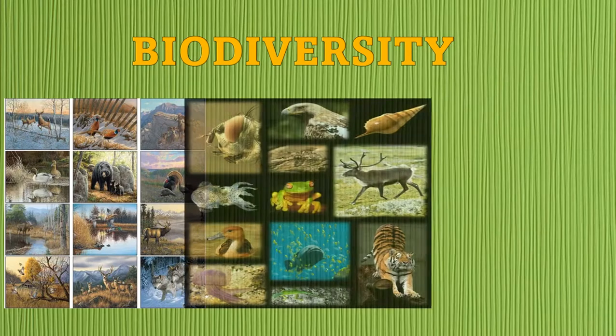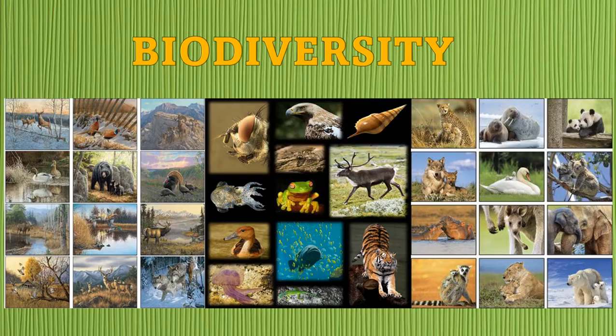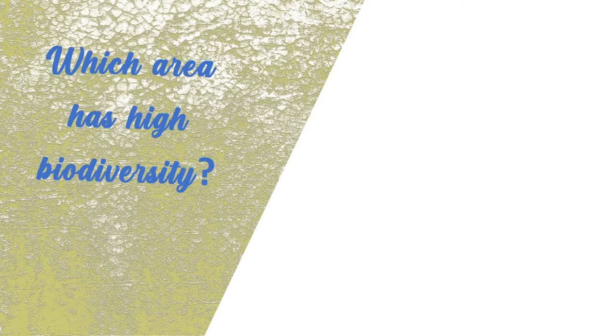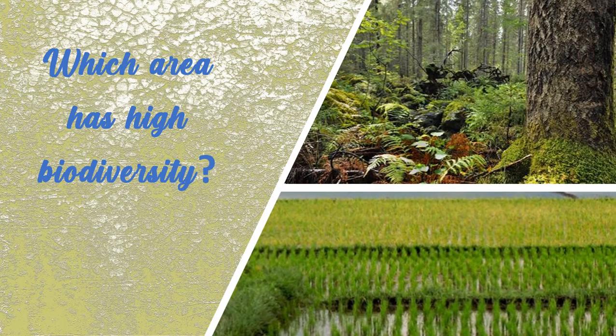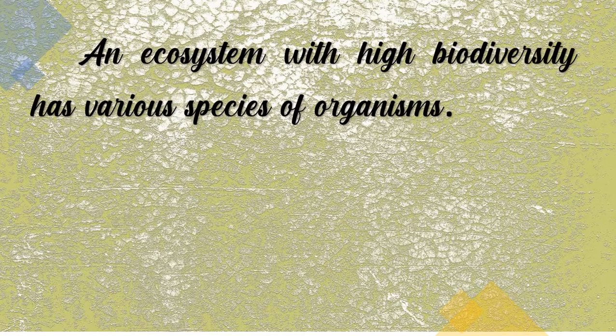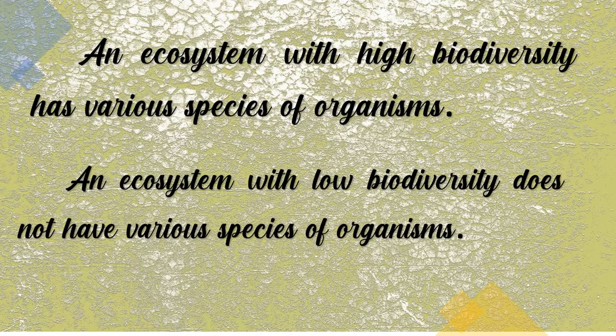In Module 6, you have learned how evolution through natural selection can result in biodiversity. In this module, you will learn how biodiversity can influence the stability of an ecosystem. Biodiversity describes how varied life forms are in different ecosystems. An ecosystem with high biodiversity has various species of organisms, while an ecosystem with low biodiversity does not.